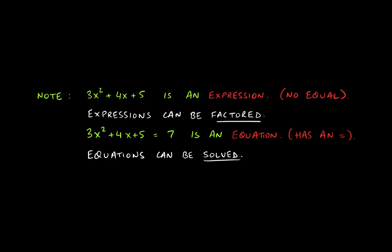Next, note the difference between an expression and an equation. Every single problem we've done so far in chapters 5 and 6 have all been expressions, because there was no equal sign given. An algebraic expression is simply a collection of terms — sums or differences, or products or quotients. Expressions like these can be simplified or factored — those are the only two questions you can ask. Equations, on the other hand, can be solved, and you determine which it is by looking for an equal sign.